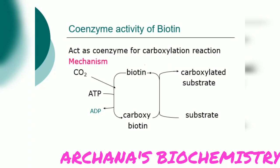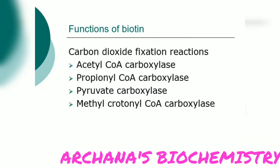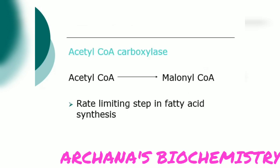Biotin acts as a coenzyme for all carboxylation reactions — note that there are also carboxylation reactions which do not require biotin. In the mechanism, carbon dioxide is utilized along with ATP; biotin is converted to carboxybiotin while the substrate gets carboxylated. The enzymes that utilize biotin are acetyl-CoA carboxylase, propionyl-CoA carboxylase, pyruvate carboxylase, and methylcrotonyl-CoA carboxylase — all carboxylases require biotin. Acetyl-CoA is converted to malonyl-CoA, the rate-limiting step in fatty acid synthesis, which requires biotin.